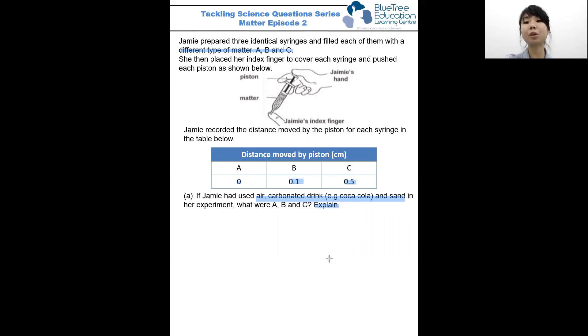So in this setup, when Jamie pushes on the piston, what is she trying to find out? She's trying to find out whether the matter within can be compressed. And whether or not the matter within can be compressed depends on whether the matter has a definite volume. Should it have a definite volume, it will not be able to be compressed. But if it does not have a definite volume, it will be able to be compressed.